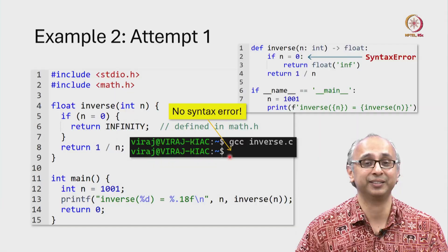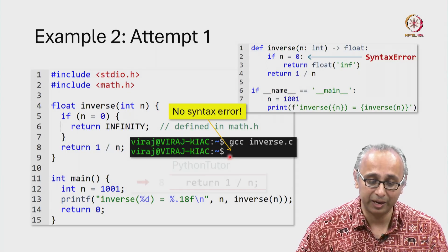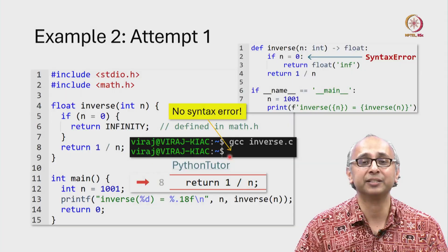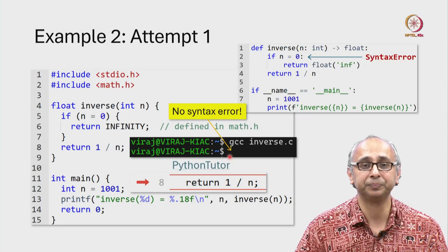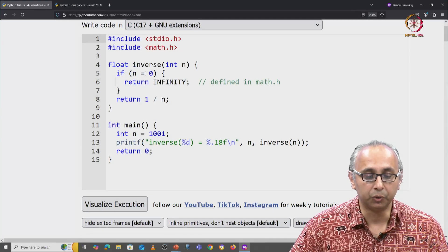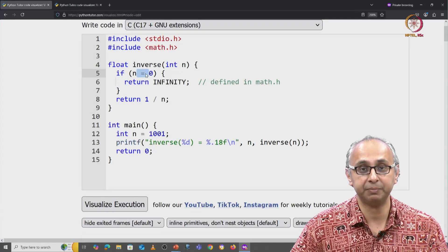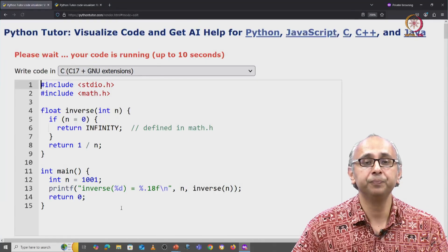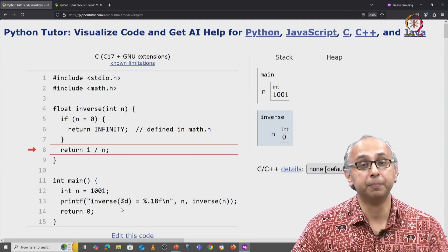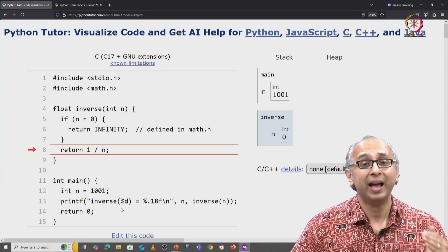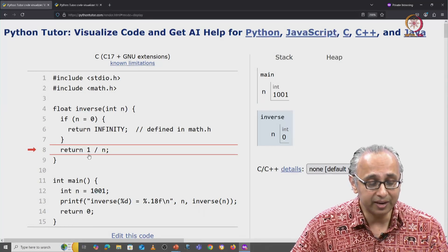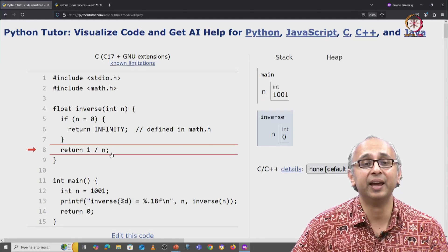If I run that code however, I will get an error. Let's take a look at this error on Python tutor. Here is our C code using the assignment operator. When we click on visualize execution, this code will compile successfully and then it will actually run successfully until line 8. Then we will get an error.